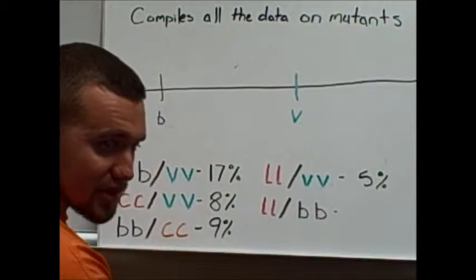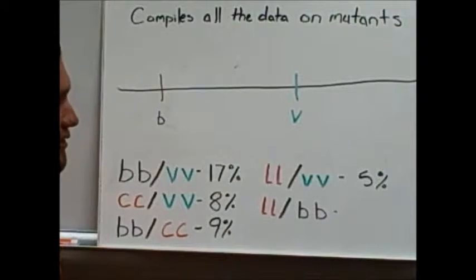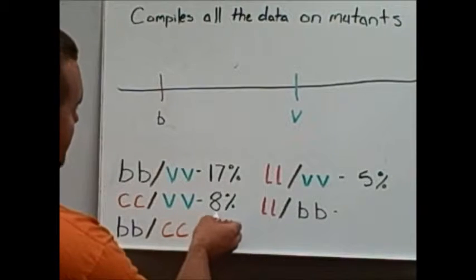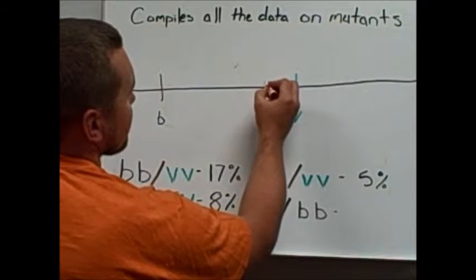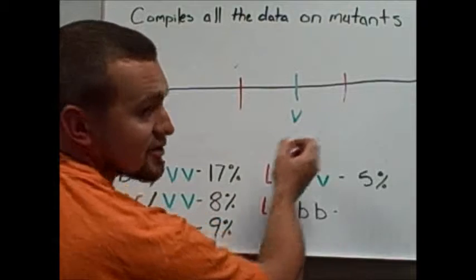Then he looks at the recombination rate between the flies with the red cinnabar eyes and the little puny vestigial wings. 8%. What we'll draw in here. It's about 8 away. Could be one of these two spots.